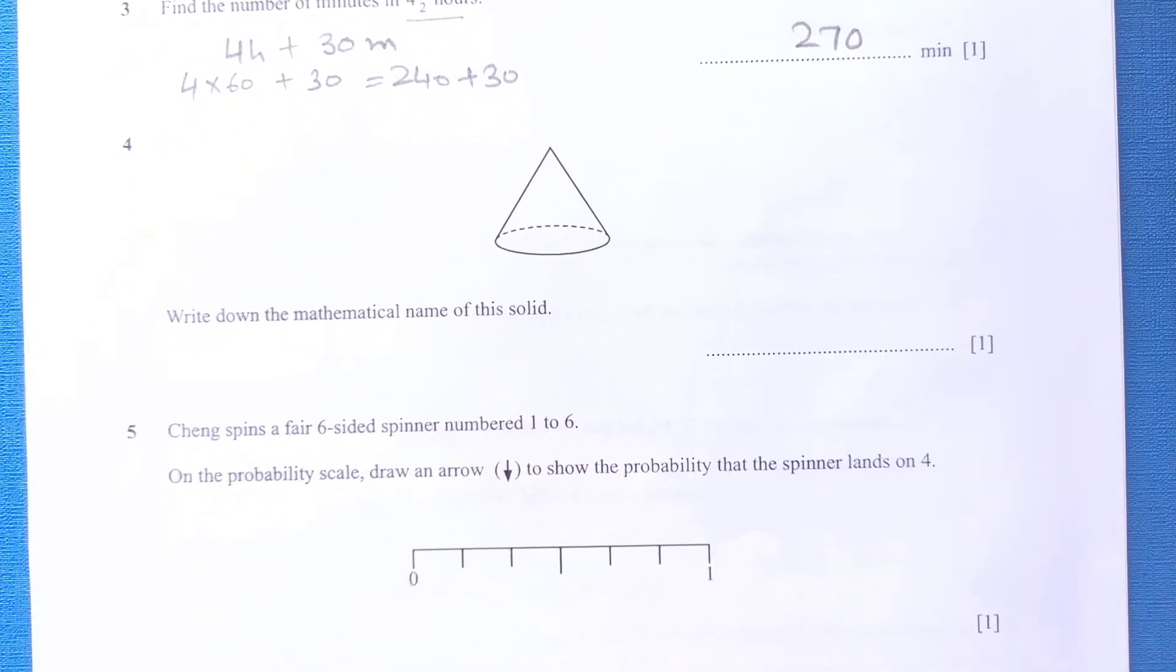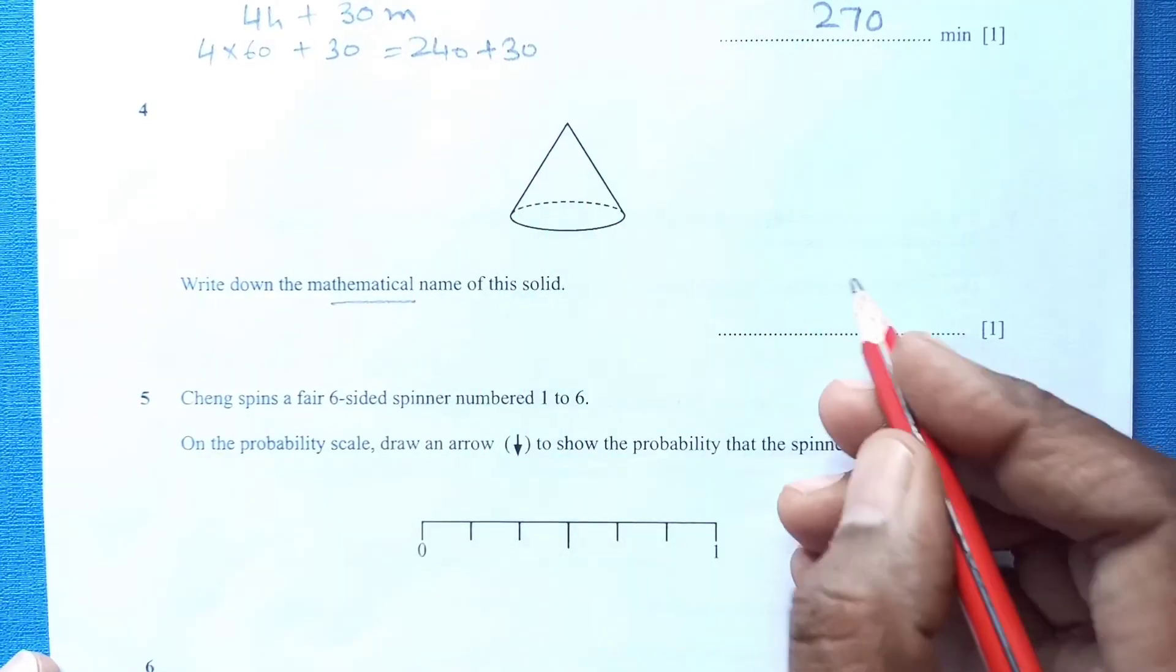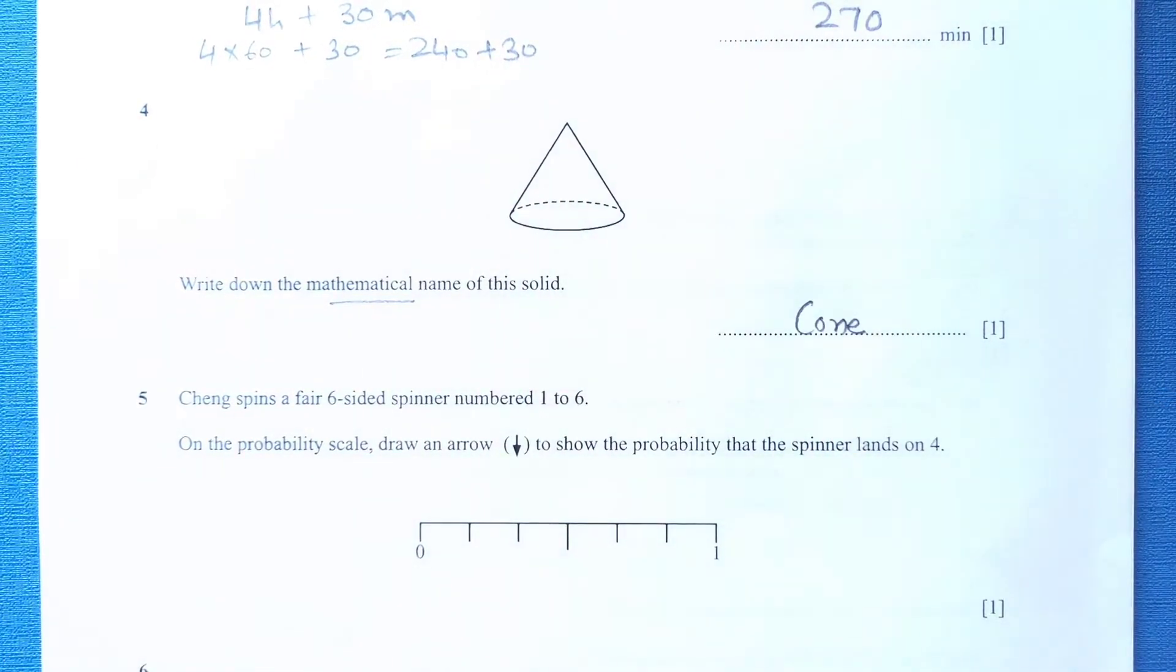Moving towards question number 4. Write down the mathematical name. You can see this is a cone. Very easy question.